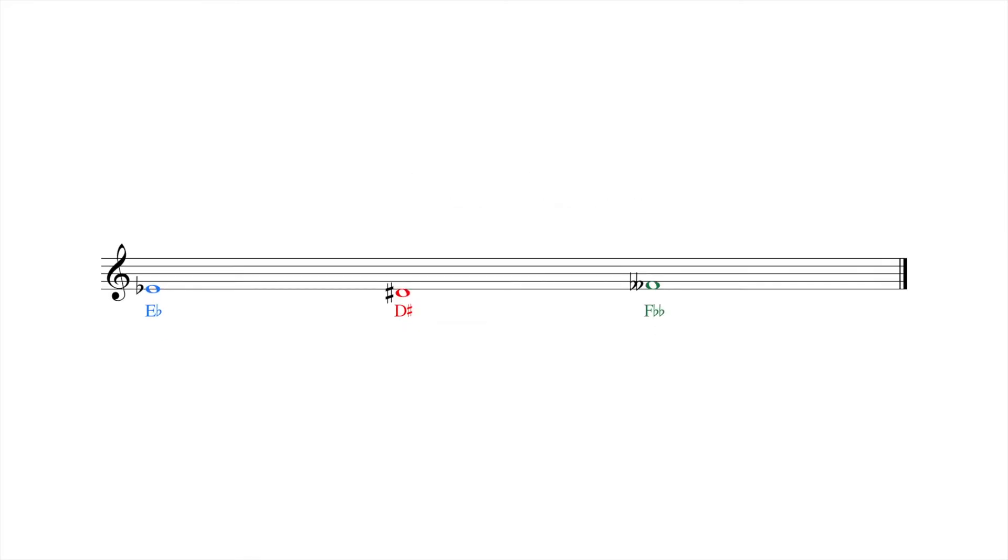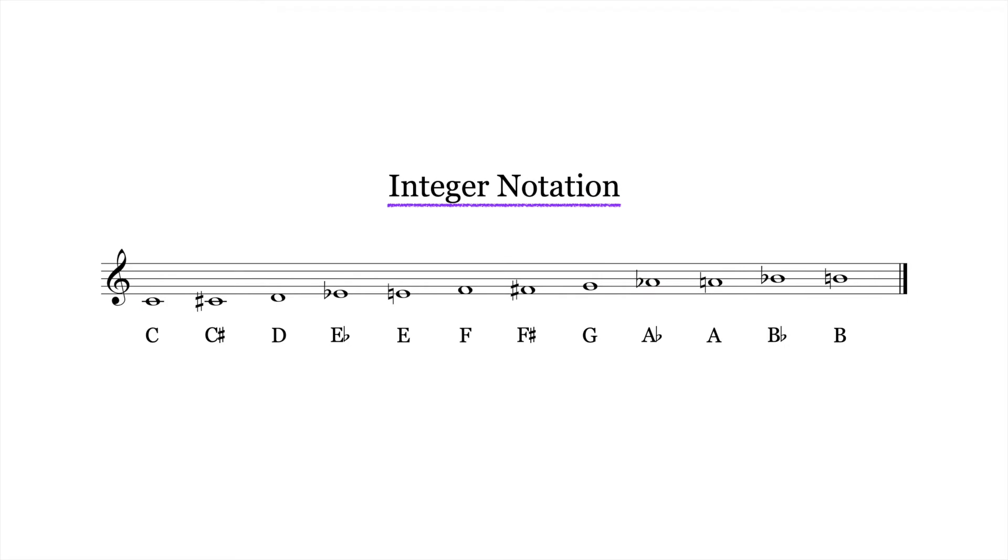Enharmonic equivalency considers all notes of the same frequency to be identical, such that D-sharp, E-flat, and F-double-flat, for example, are considered the same. Integer notation assigns a single number to each pitch class.